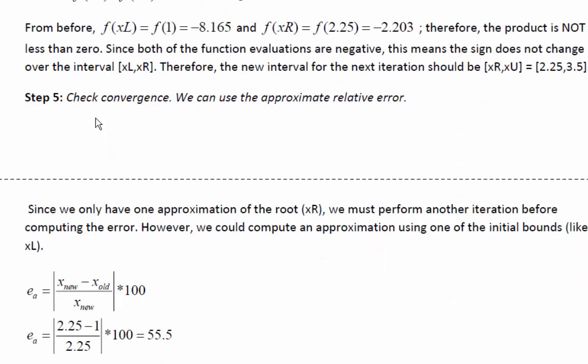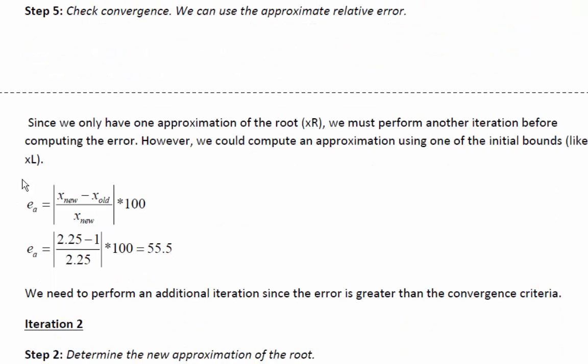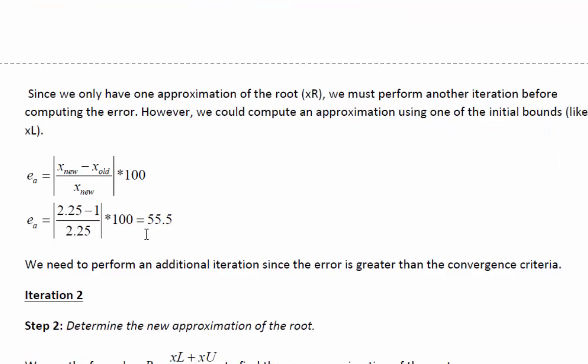We'll check the convergence criteria. We can do that by comparing it to one of the bounds since this is our first iteration. So |2.25 - 1| / 2.25 × 100. We currently have an error of 55.5%. So we're going to have to iterate.